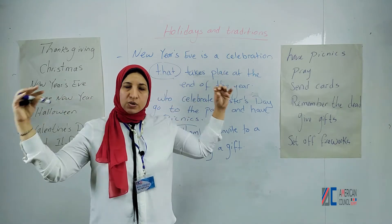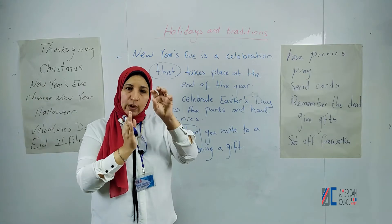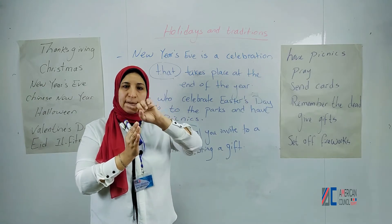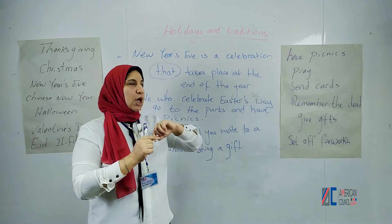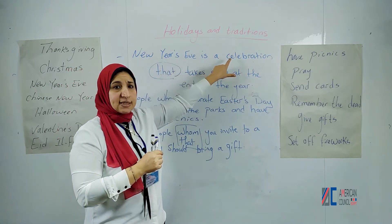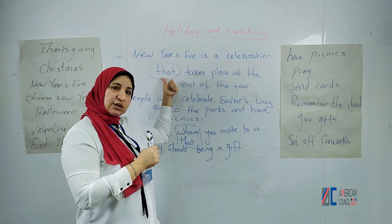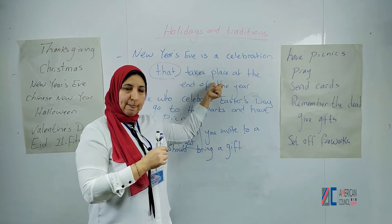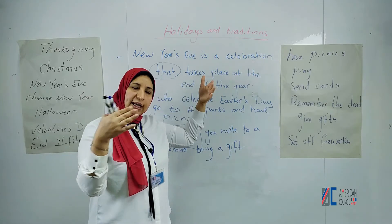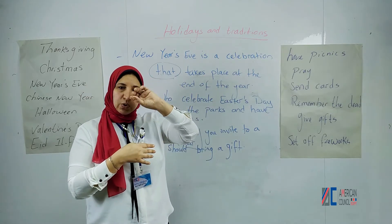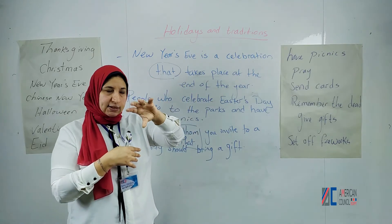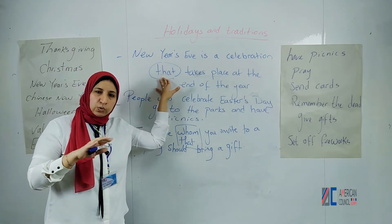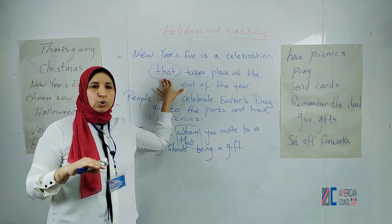To avoid this long structure, we put them together with the relative pronoun so we don't repeat the subject or the word twice. New Year's Eve is a celebration that — or which — takes place at the end of the year. Now we've related them together using 'that'. Now we're talking about things, but if we're talking about a person, we don't use 'that', we use 'who'.